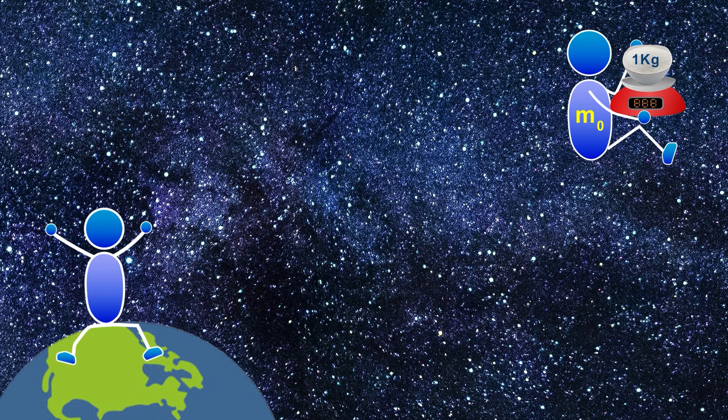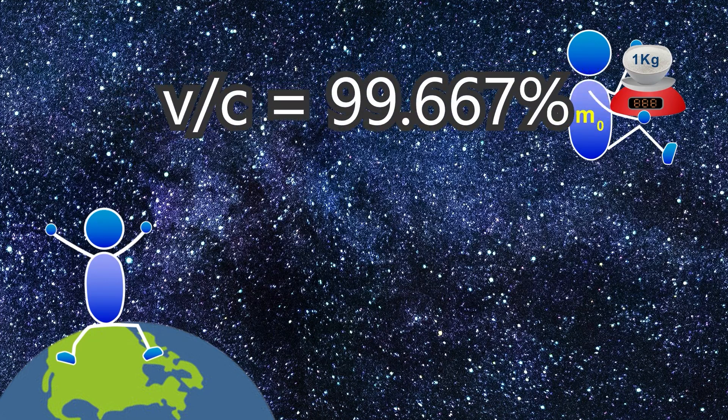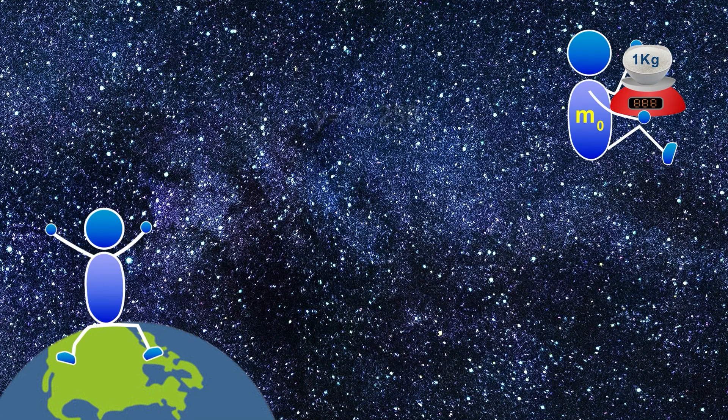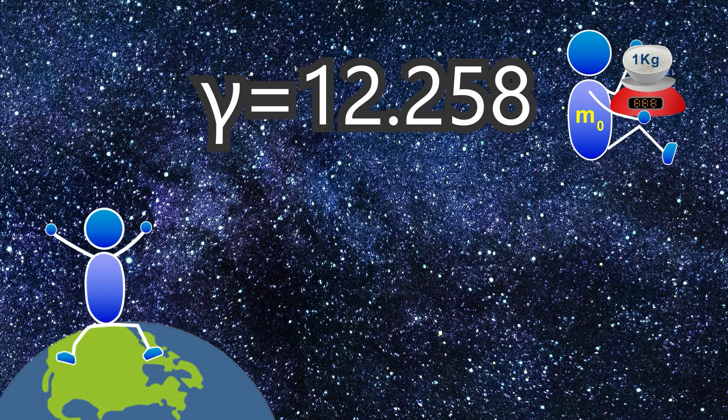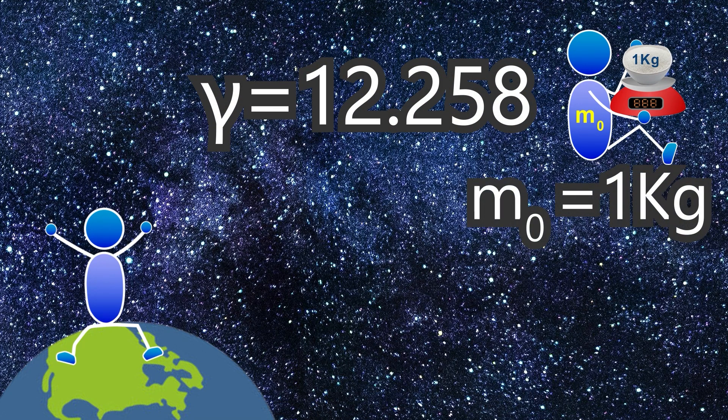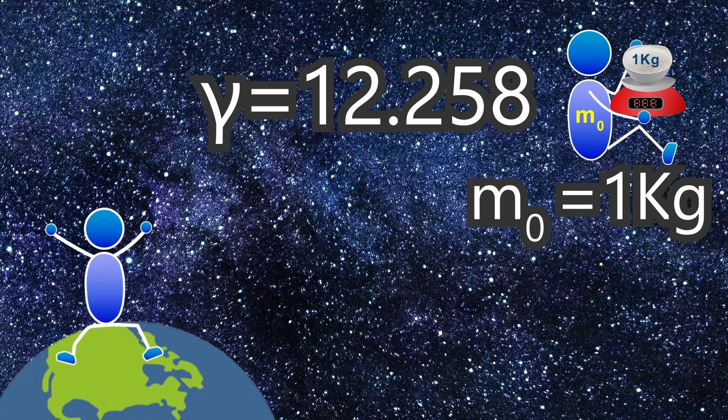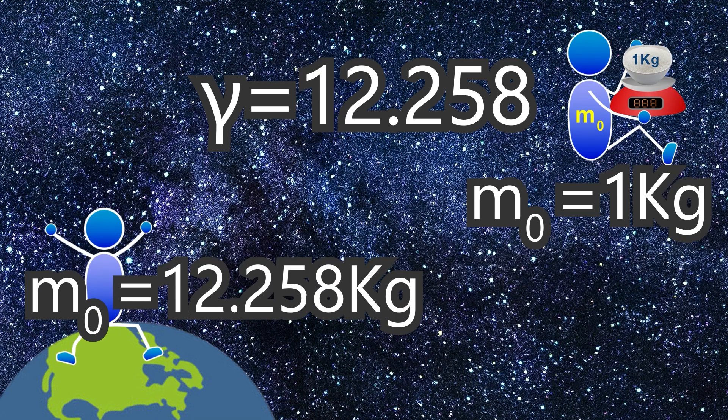Now let's speed up the bowl of sugar with you carrying it to 99.667% the speed of light. The Lorentz factor is now 12.258, meaning that to you the mass still is 1 kilogram, but to the observer from whom you are moving away at 99.667%, the mass they see is 12.258 kilograms.